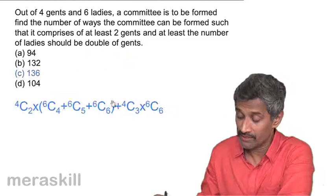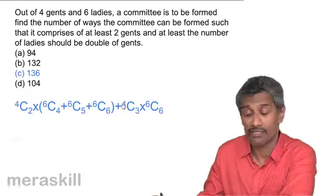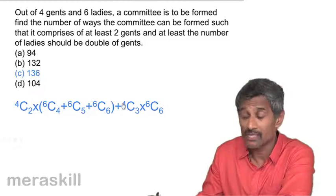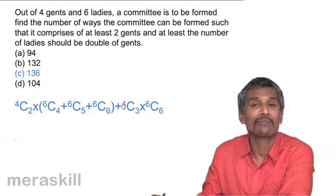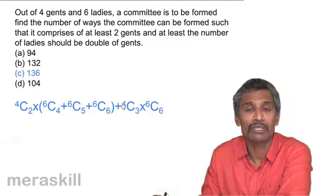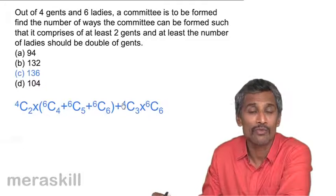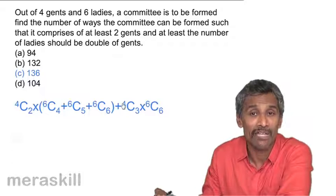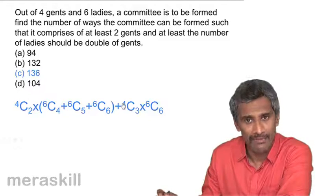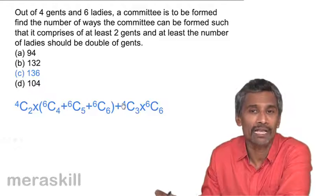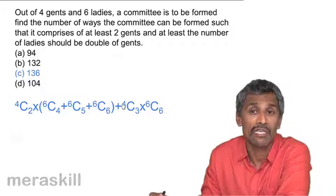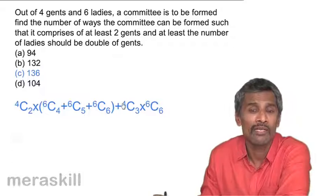All these examples were about maximum and minimum selection. 'At least' always means minimum — so you consider the minimum value and all possibilities above it, up to the available total. 'At most' means maximum — you cannot consider any possibility of having more than the stated number. For example, 'at most four' means you cannot have more than four.